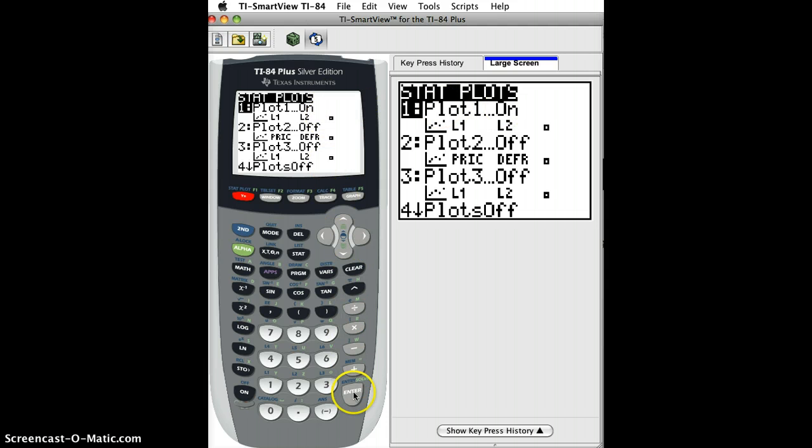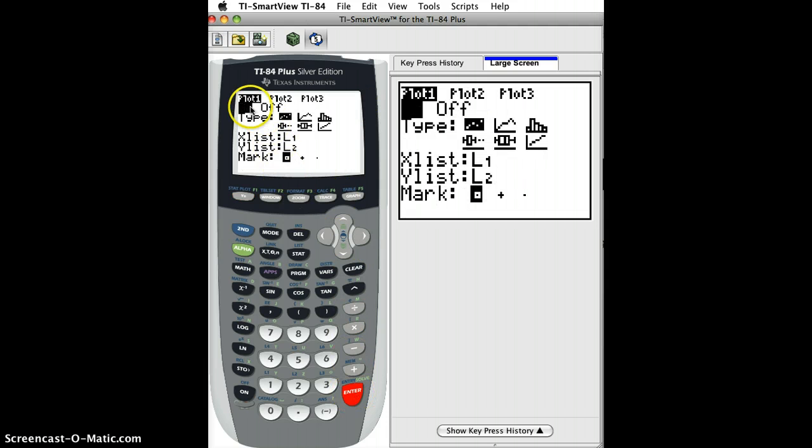Let's just take a look at what that looks like. It's on, the type is scatter plot, explanatory X1 is list one and response is L2. And look, all looks good.